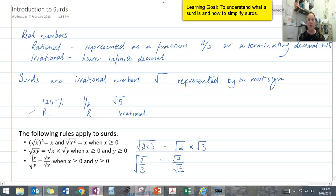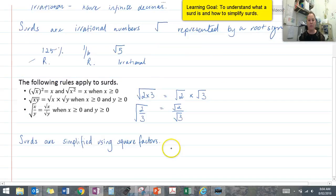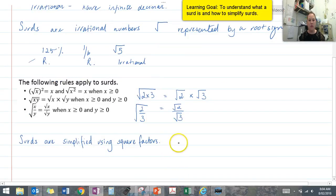Now these three rules are going to be very important in being able to simplify your surds. Next we're going to look at how we simplify surds, and we do that using square factors combined with using the rule of xy equals the square root of x times the square root of y. Now when we say square factors, I'm talking about numbers like 4 and 9 and 16. They're values that have a whole number when you find the square root.